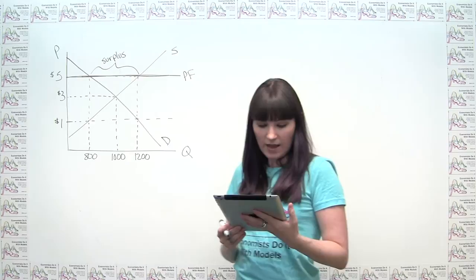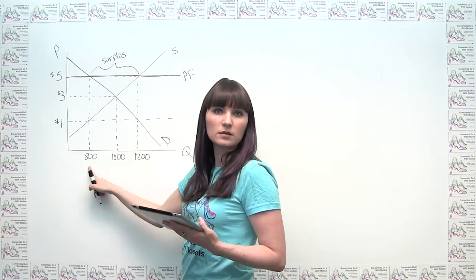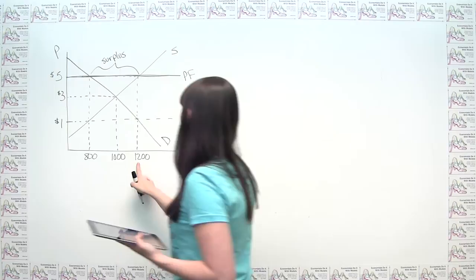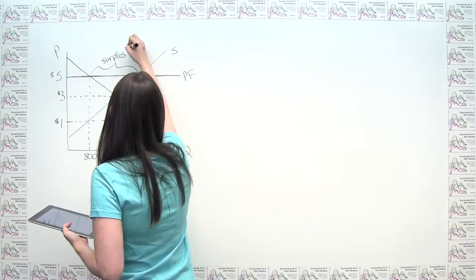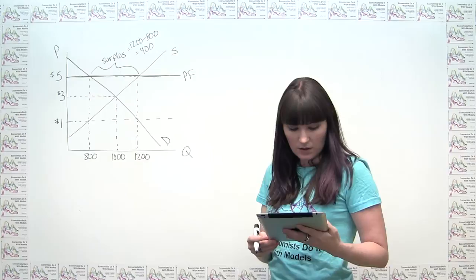So we have 1,200 bushels of corn produced. How many are purchased by consumers? That's just reading the graph. At a price of $5, 800 of those bushels are purchased by consumers. How much is purchased by the government? That's just the difference. Of the 1,200 bushels produced, 800 are purchased by consumers and the remaining 400 are purchased by the government. The surplus equals 1,200 minus 800, which is 400.